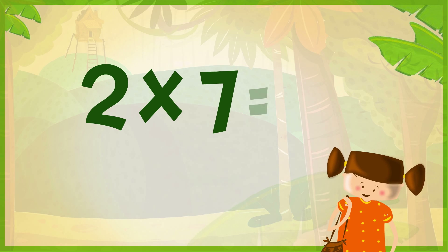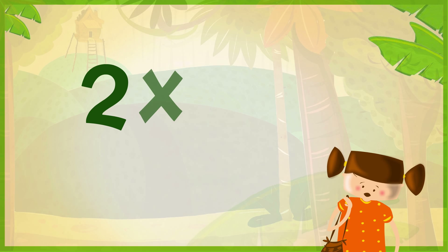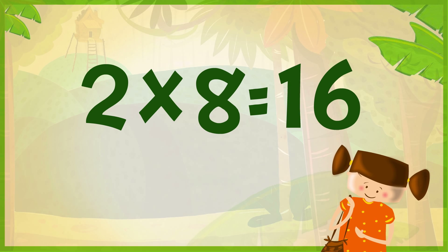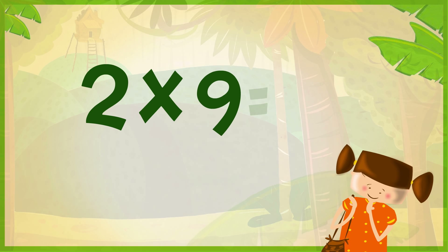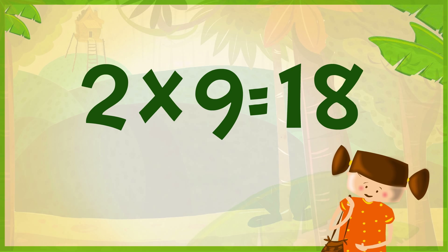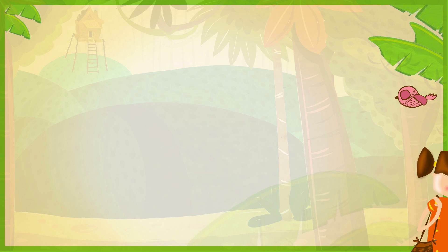2 x 7 is 14, 2 x 8 is 16, 2 x 9 is 18, 2 x 10 is 20.